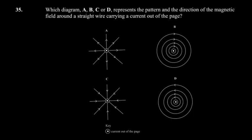The next question: a diagram represents the pattern of the magnetic field around a current-carrying conductor — a straight wire with current moving out of the page, meaning the current is coming towards you as you watch. You must choose the correct field pattern.